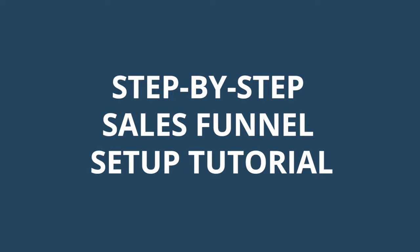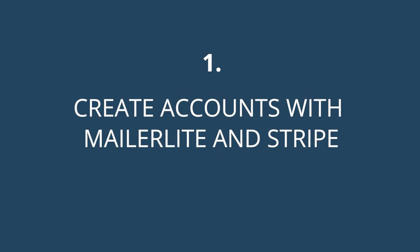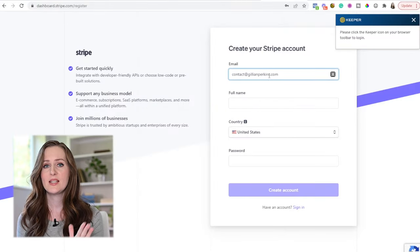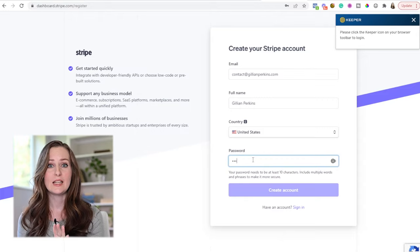The first step is to create accounts with these two softwares — MailerLite and Stripe. Both accounts are completely free and really easy to set up; you just need your name, business name, email, and a password. Pro tip: if you're starting a new business and haven't officially registered your business name, you'll want to use your own name as your business name, because that is the most legal thing to do rather than operating under a fictitious non-legal name.